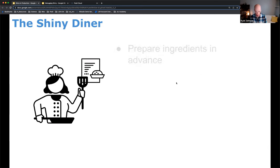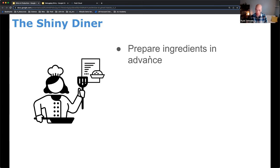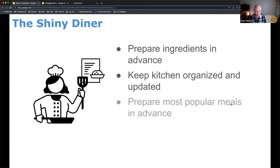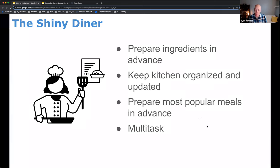After running profvis, you brainstorm ways to improve your chef's processes. One idea is preparing the ingredients in advance — instead of cutting carrots every time an order comes in, everything is already prepared. You should also keep the kitchen organized and updated, making sure the chef isn't running around looking for things, and ensure you have the right tools for the job. Preparing the most popular meals in advance is also useful — like a pizzeria that prepares margarita pizzas ahead of time since nine out of ten customers order them.